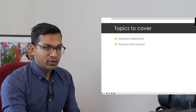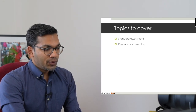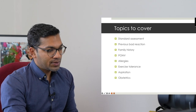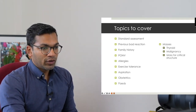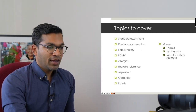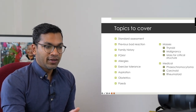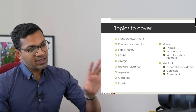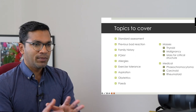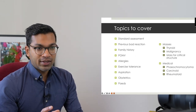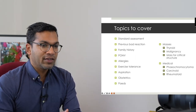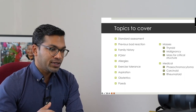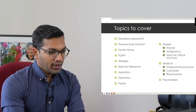Here's the range of topics: we'll quickly go through the standard assessment, previous bad reactions, family history, PONV, allergies, exercise tolerance, aspiration risk, obstetric assessments, paeds assessments, and then unique things like neck masses, thyroid, malignancies affecting critical structures, subtle but anesthetically relevant medical problems, frameworks for interesting medical problems, and pacemakers.